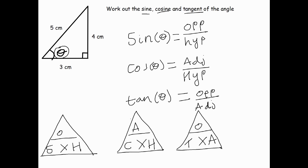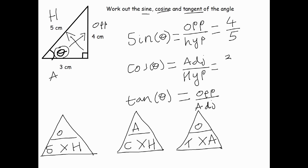In this example, we just want to find the sine, cosine, and tangent. First, we label the triangle. Opposite the right angle is our hypotenuse. Opposite theta is our opposite. And the remaining side is the adjacent. So the sine of the angle is opposite over hypotenuse, which is 4 over 5. Cos of the angle is adjacent over hypotenuse, which is 3 over 5. And tan of theta is opposite over adjacent, which is 4 over 3.